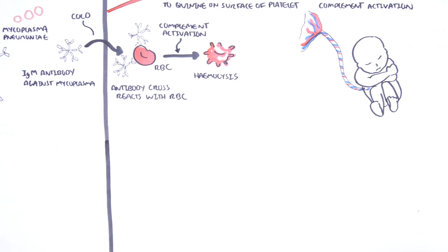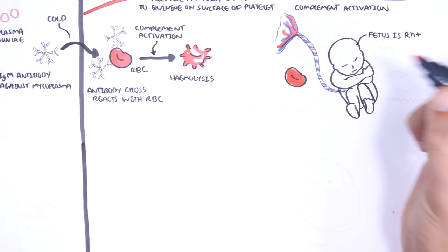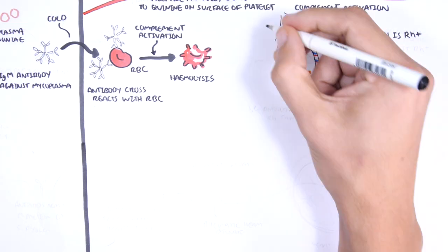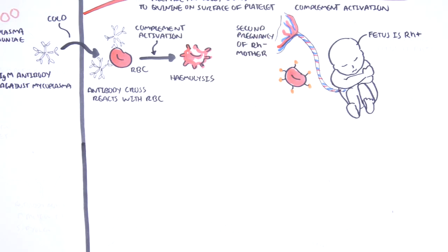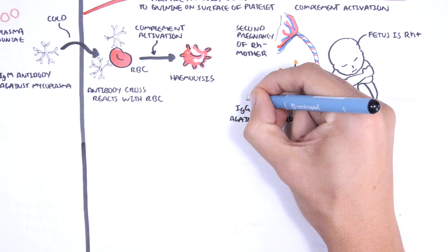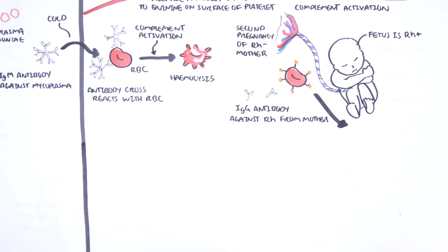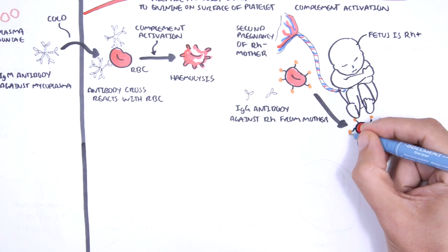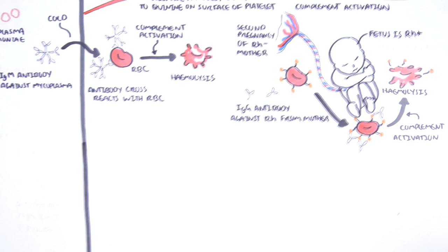Another example of hypersensitivity type 2 involves antibodies produced during pregnancy. In this scenario, this is the second pregnancy of a rhesus-positive fetus in a rhesus-negative mother. Because this is the second pregnancy, the mother may have already created IgG antibodies against the rhesus antigen from the first pregnancy, which means the rhesus antibodies can cross the placenta and into the fetus' circulation, attaching onto the red blood cells of the fetus and causing hemolysis in the fetus.